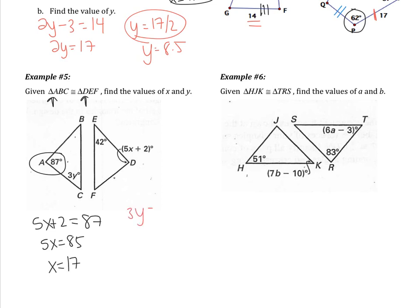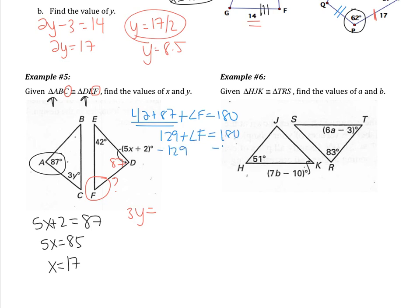For Y: angle C = 3Y is congruent to angle F, but angle F is not directly given. Since angle D ≅ angle A = 87, and all triangle angles sum to 180, we get 42 + 87 + angle F = 180, so 129 + angle F = 180, giving angle F = 51 degrees. Setting 3Y = 51 and dividing by 3, Y = 17.